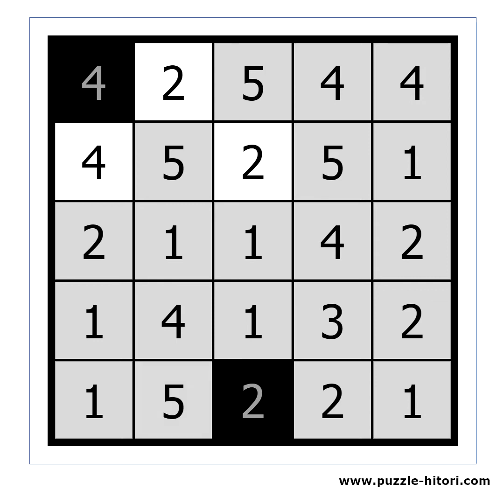First we can make the five white, while at the same time checking its row and column for other fives. There is one above, which we can make black. Then we repeat the same for this one.